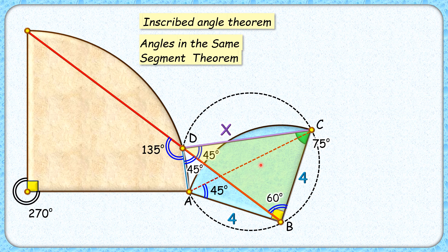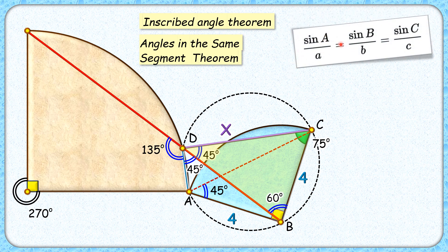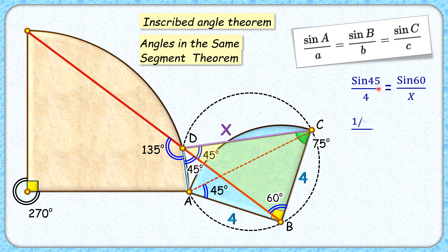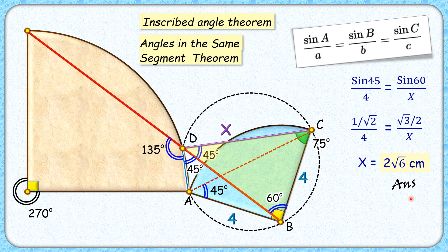Now in this triangle let's apply the sine rule: sine A over a equals sine B over b equals sine C over c, where A, B, C are the respective angles and a, b, c are the sides opposite to those vertices. So here, taking sine 45 degrees over 4, that will be equal to sine 60 degrees over x. Putting in the values, sine 45 is 1 over root 2 and sine 60 is root 3 over 2. Simplifying and solving, we get x as 2 times root 6 centimeters, and that's our answer.